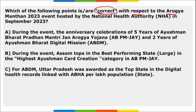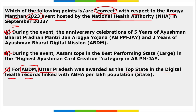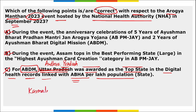Regarding Arogya Mantra 2023 hosted by the National Health Authority: options A and B are correct, but C is wrong. C says UP was awarded as the top state in digital health records linked with ABHA — this is incorrect; it is actually Andhra Pradesh, followed by Karnataka in second position.